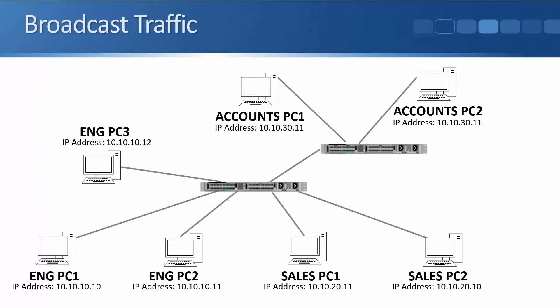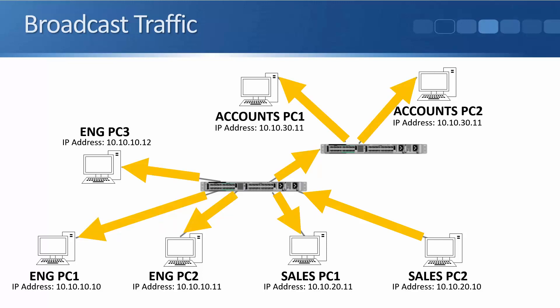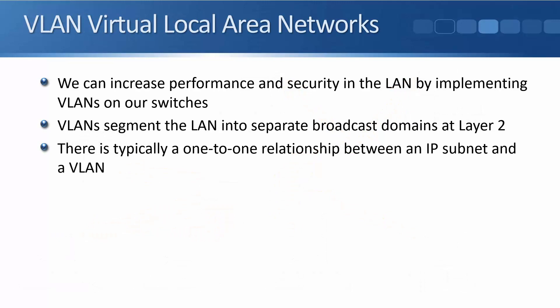To highlight the bandwidth problem, consider a slightly different network topology: the same switch in the middle with sales and engineering PCs, connected to another switch in a different part of the building that has accounting PCs plugged in. When the sales PC sends broadcast traffic, it gets flooded out all ports on the first switch, hits the other switch, and gets flooded out all ports there as well — hitting the accounting PCs and the inter-switch link when there's really no need to send the traffic there.